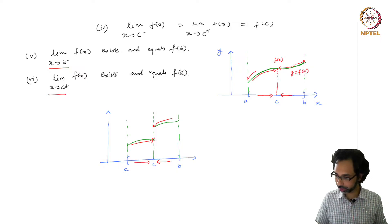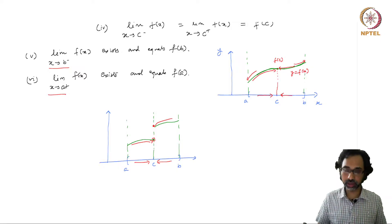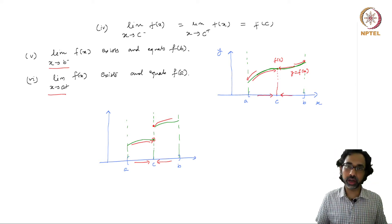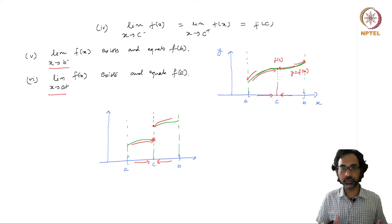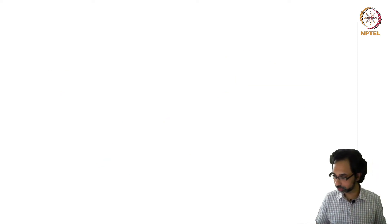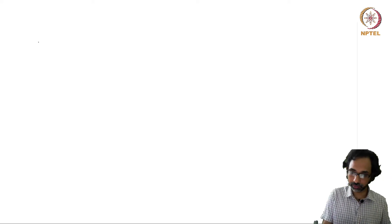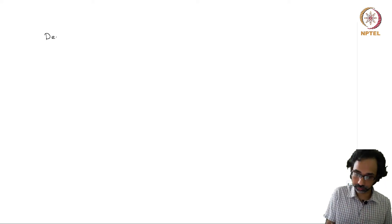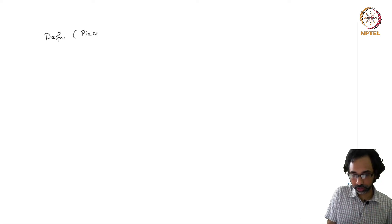Another sufficient condition is when the function may not be continuous, but it can be broken into finitely many pieces where it is continuous. This is the definition of a piecewise continuous function.